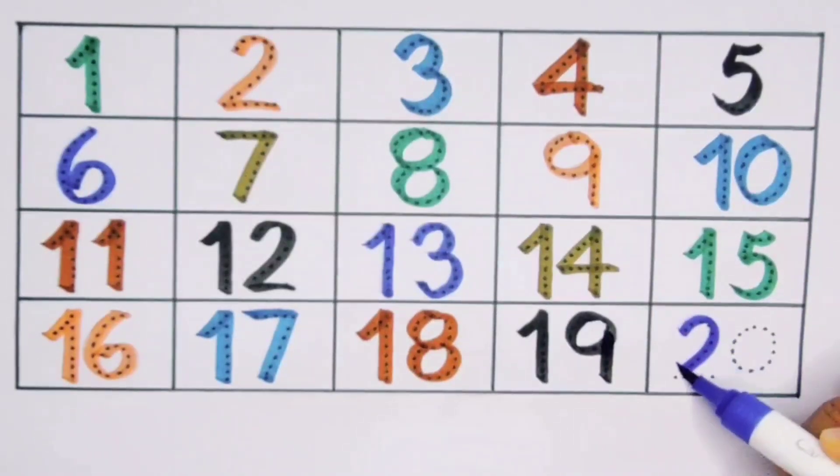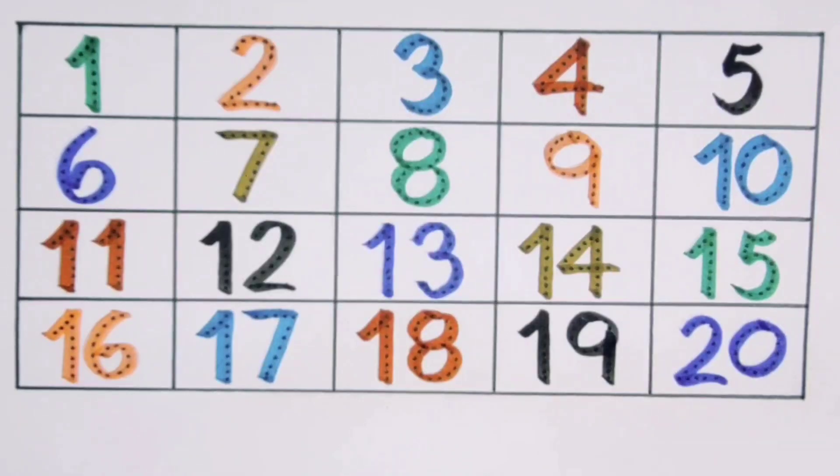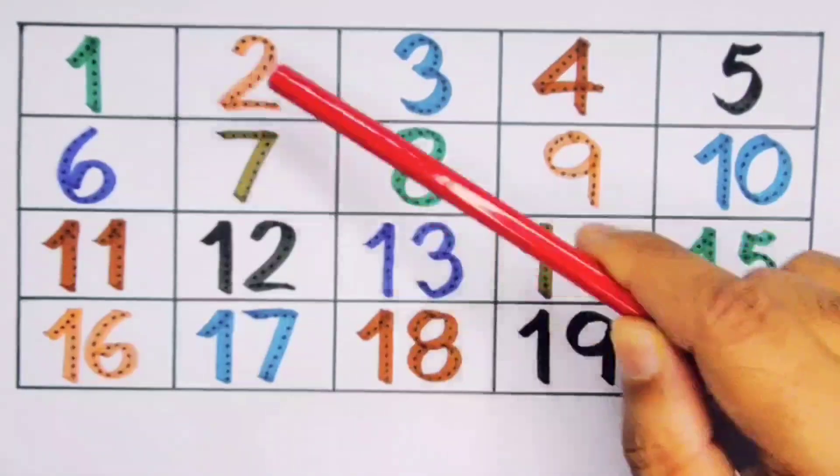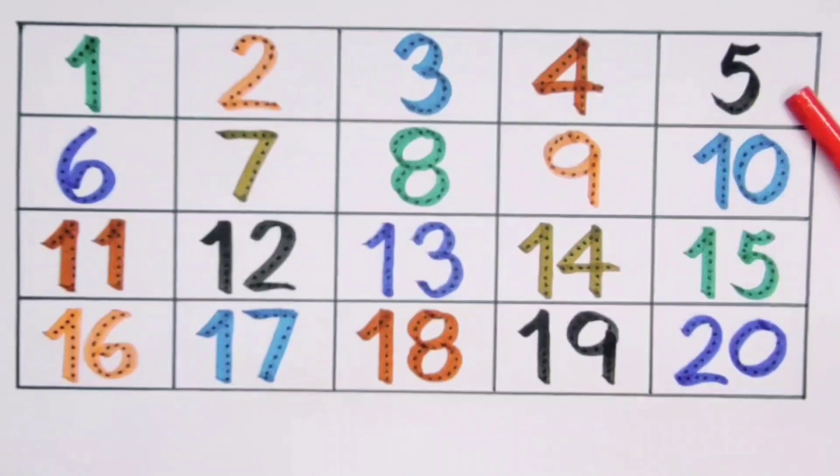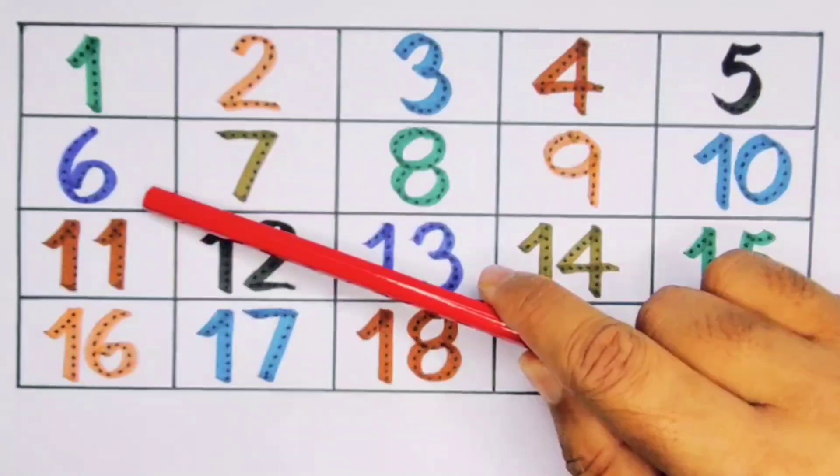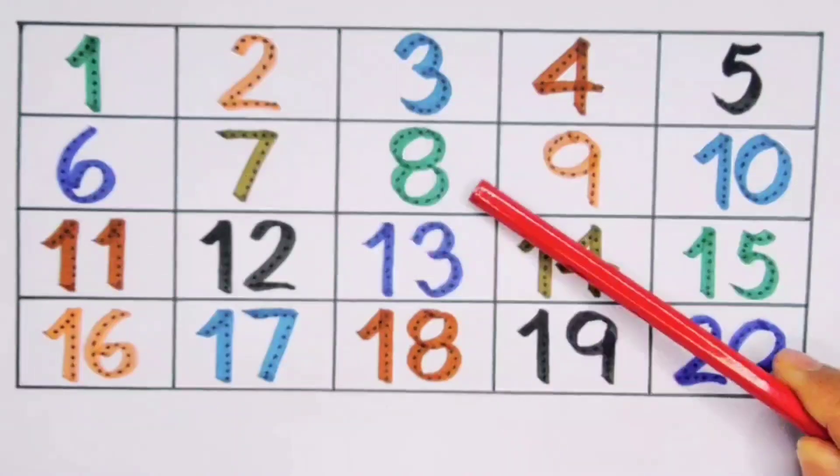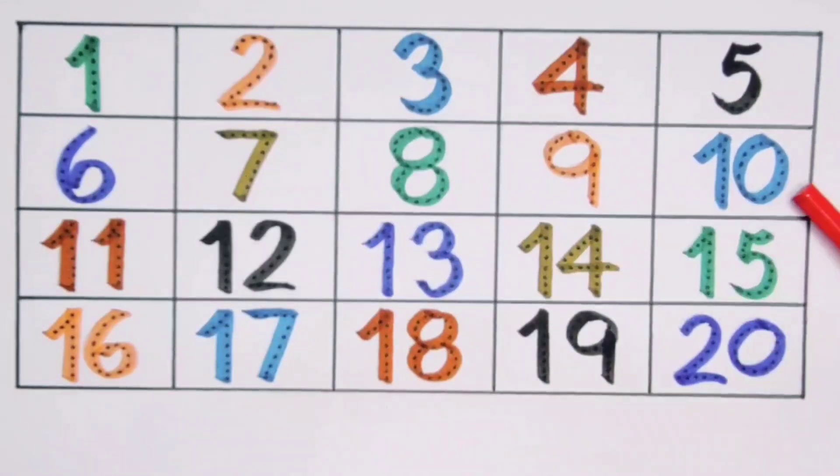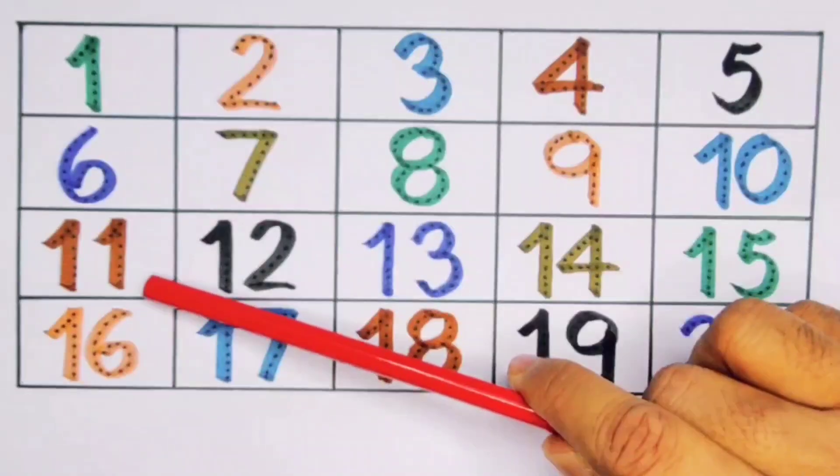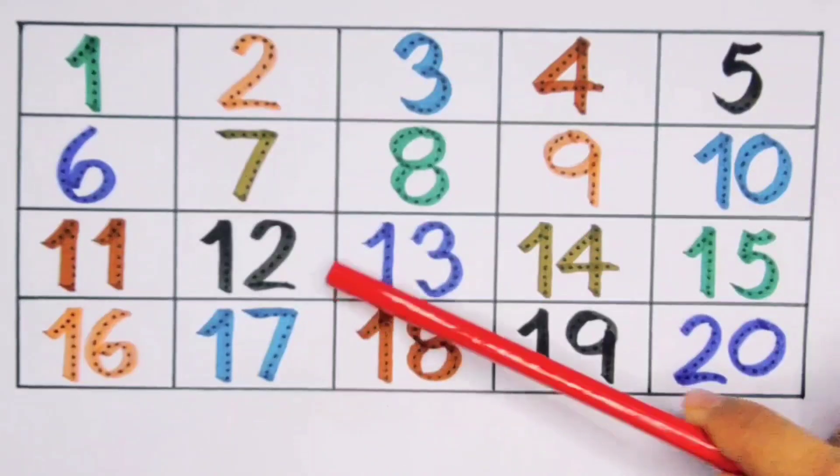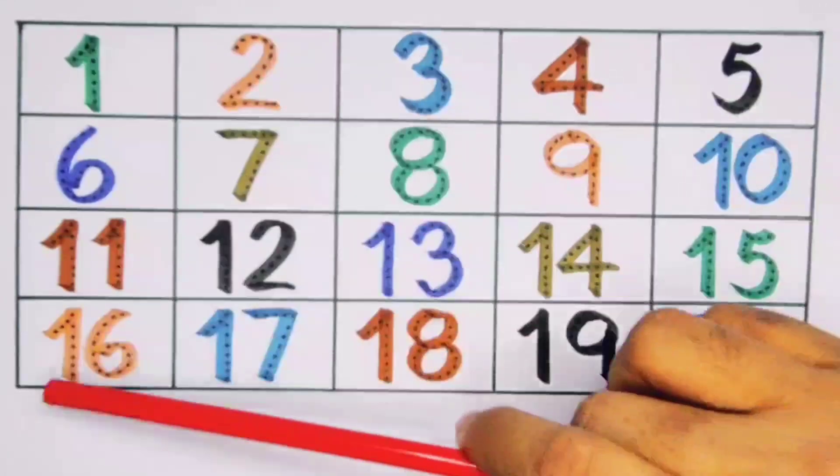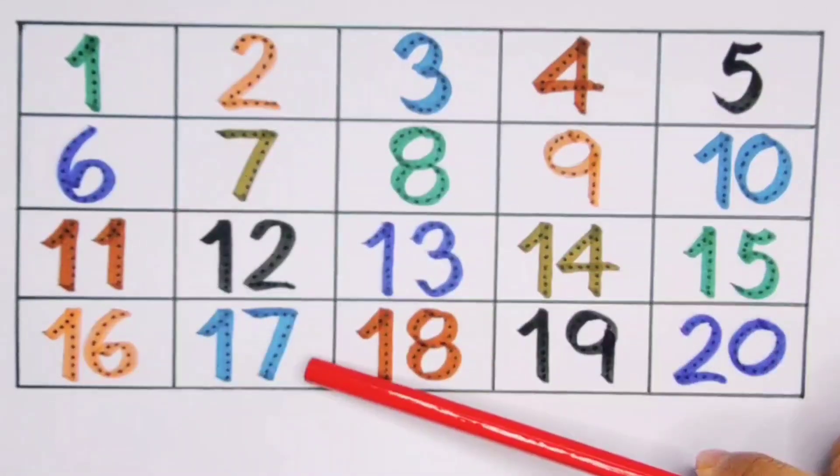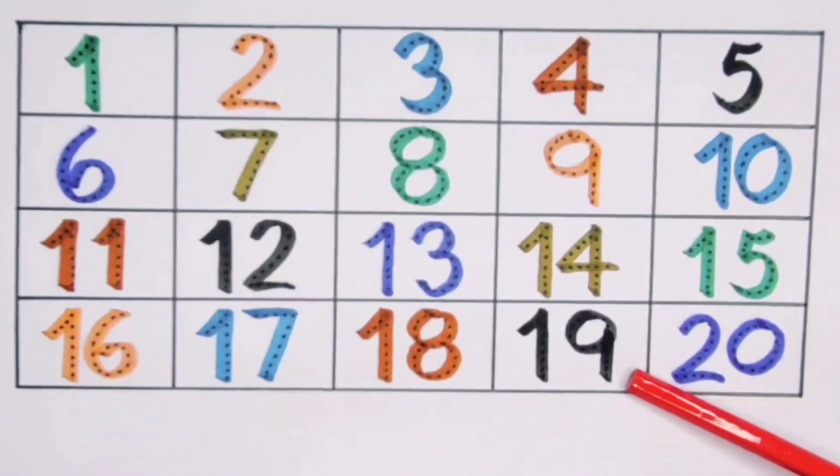Number 20. Now, what did we learn? We learned numbers 1 through 20: 1, 2, 3, 4, 5, 6, 7, 8, 9, 10, 11, 12, 13, 14, 15, 16, 17, 18, 19, 20.